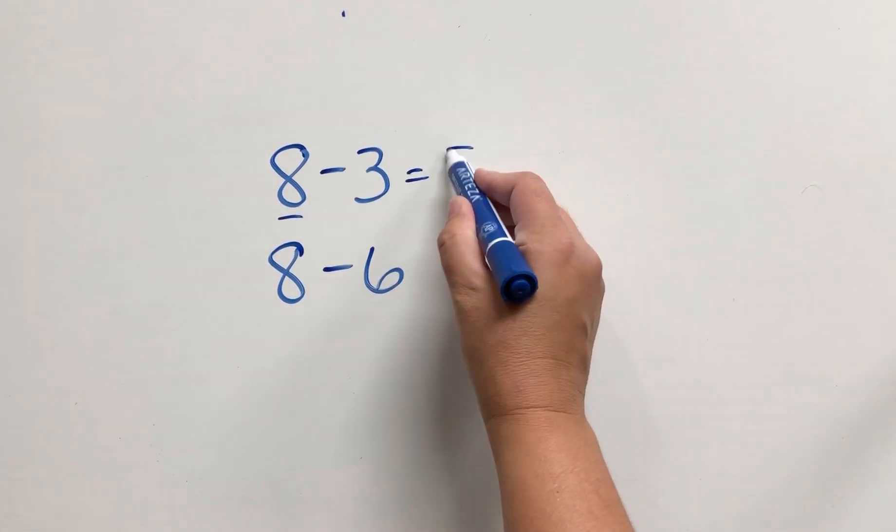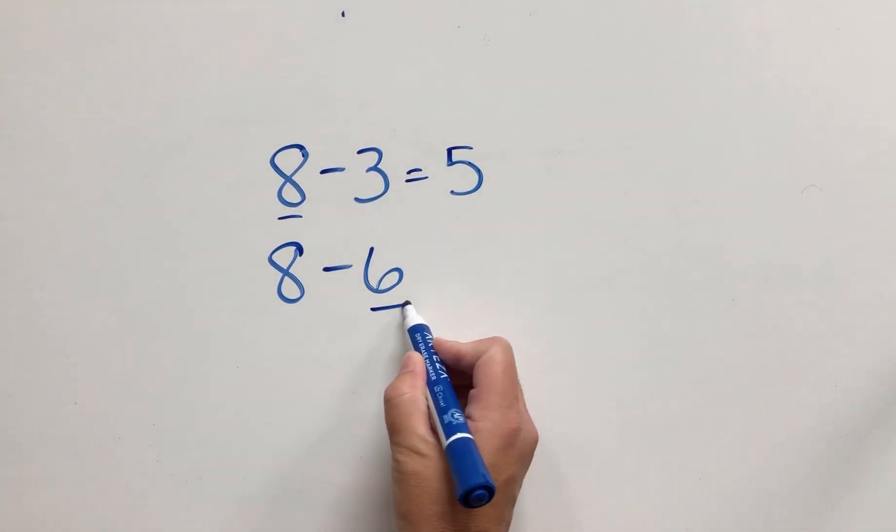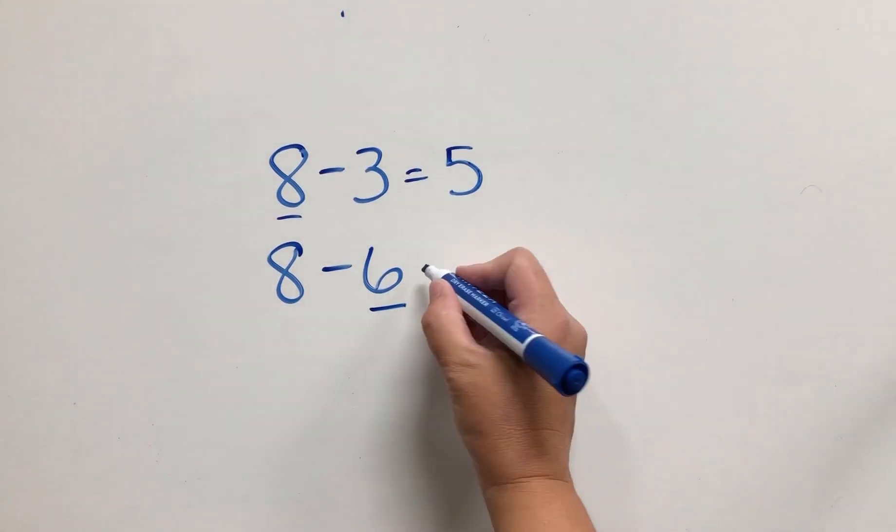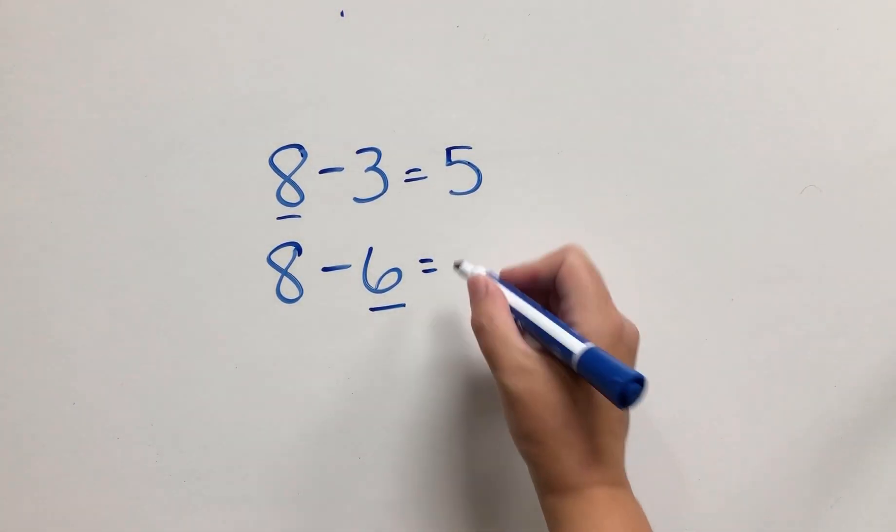Counting up, on the other hand, is when we start with a smaller number and we count up to the bigger number in order to find the difference. For this example, we would start with six and count up seven, eight—we've counted up by two, so our difference is two.